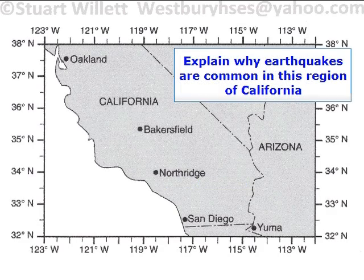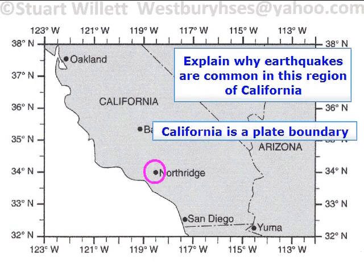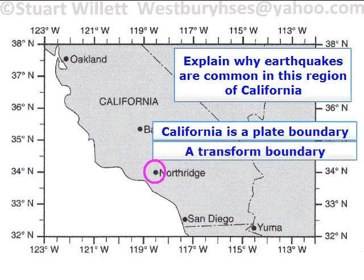Next: explain why earthquakes are common in this region of California. This is a map of California, and on January 17, 1994, an earthquake occurred with an epicenter at Northridge — the location we just plotted. California is on a plate boundary, and that's basically what we're looking for. It's a transform boundary.